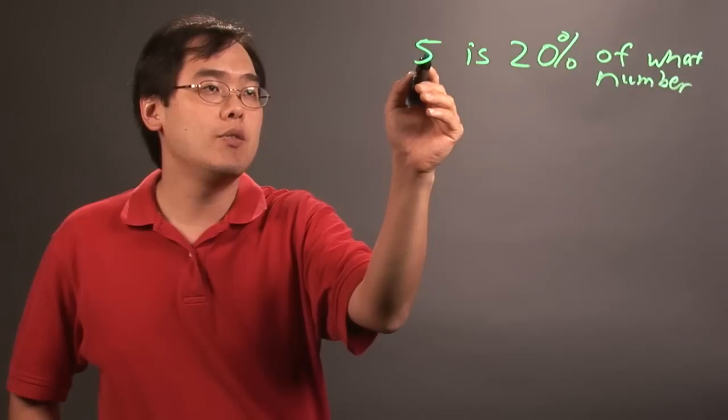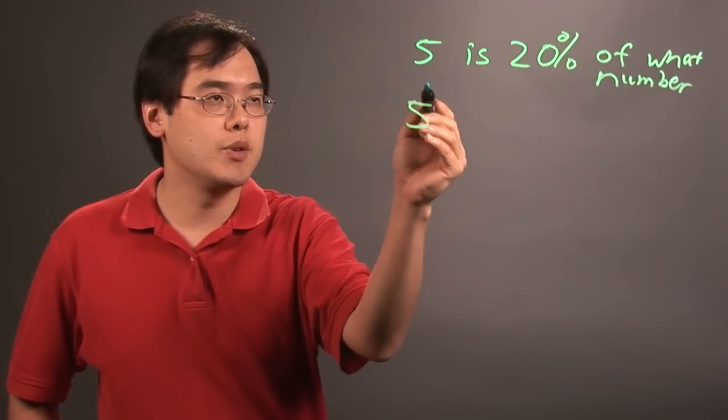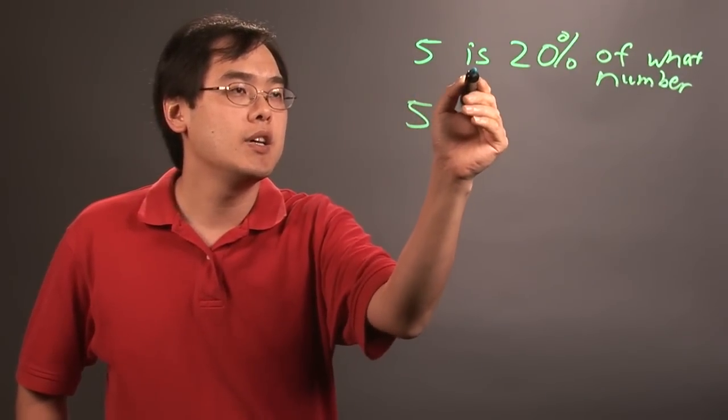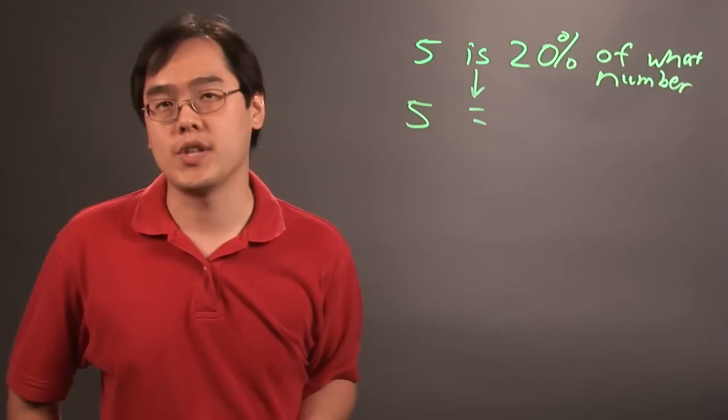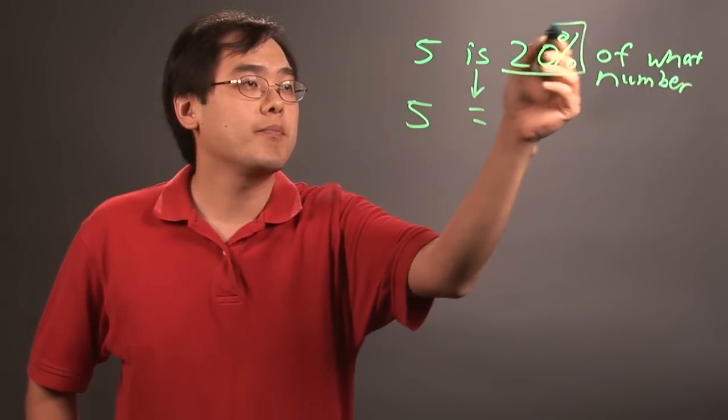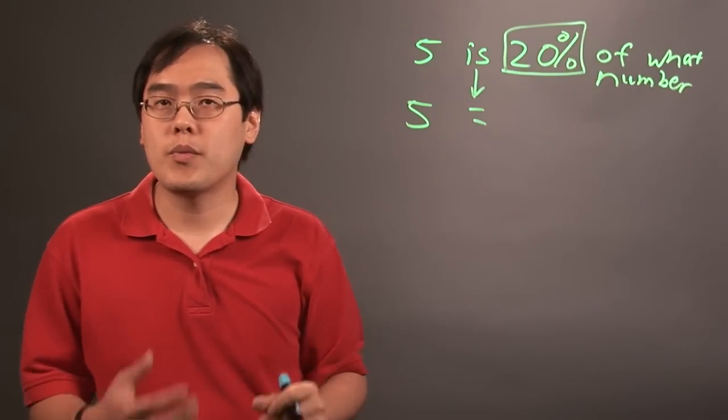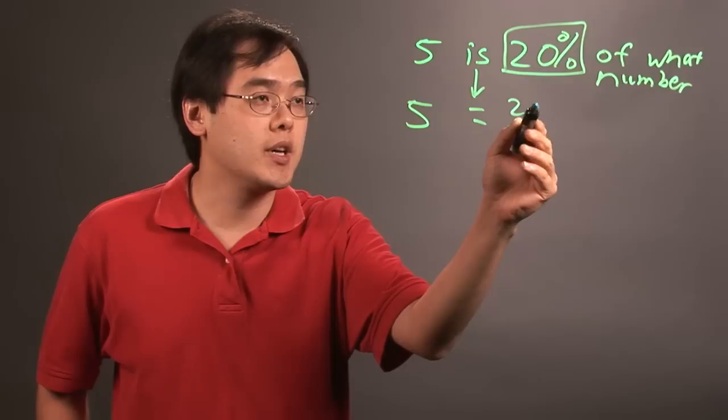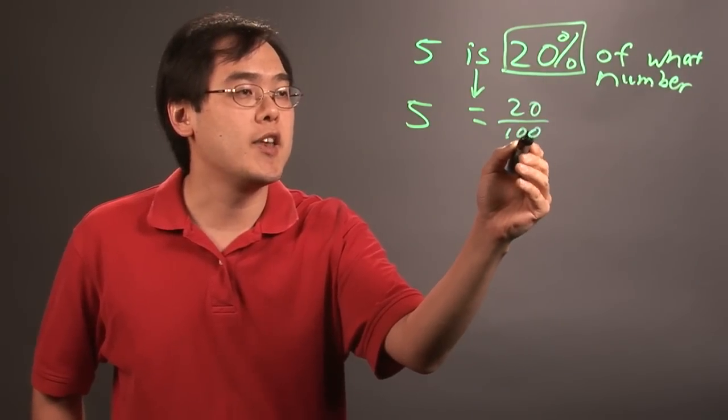You know the number 5 is going to be there, so you have the number 5. 'Is' is generally a nice way of saying equal sign. 20% - you can think of 20% as 20 over 100 because, as you know, any percent is that number over 100.